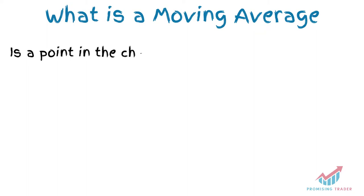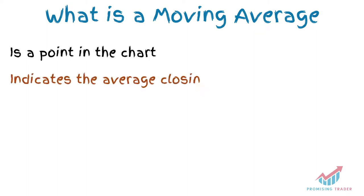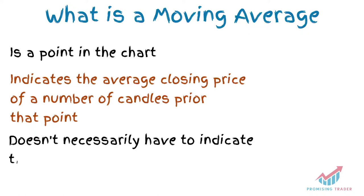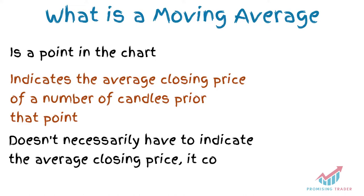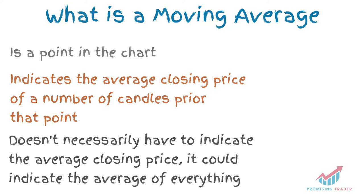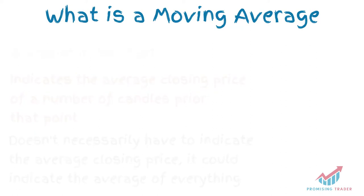What is a Moving Average? A Moving Average is just a point in the chart. It represents the average closing price of a number of candles prior to that point. Despite being usually the closing price, it could also be based on other references of a candle, such as the high, the low, or the opening prices.